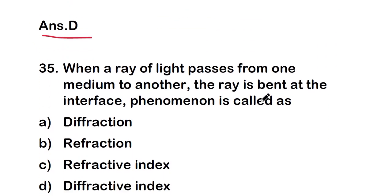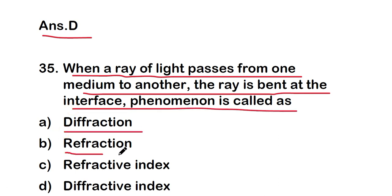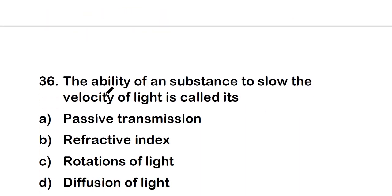Next question: when a ray of light passes from one medium to another, the ray is bent at the interface. This phenomenon is called diffraction, refraction, refractive index, or diffractive index? The right answer is option B — refraction. When a ray of light passes from one medium to another and is bent at the interface, that is known as refraction.